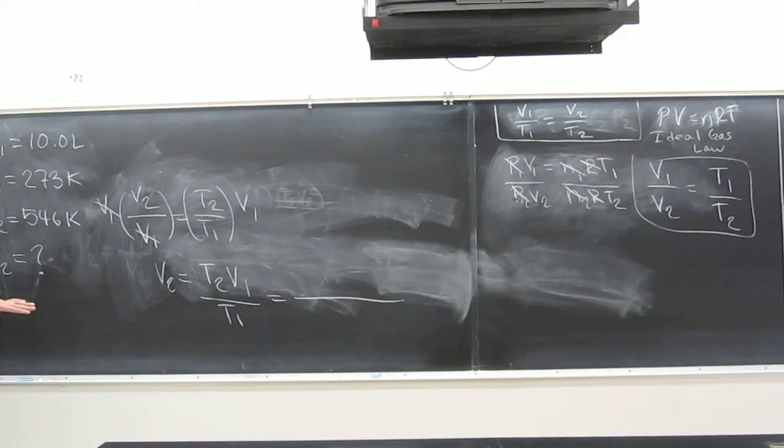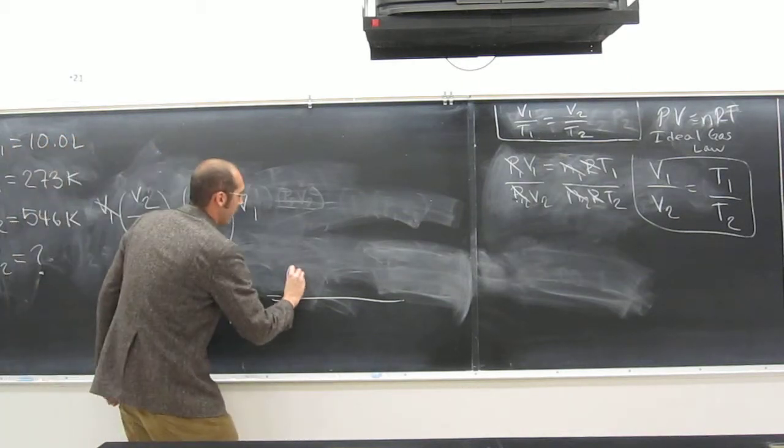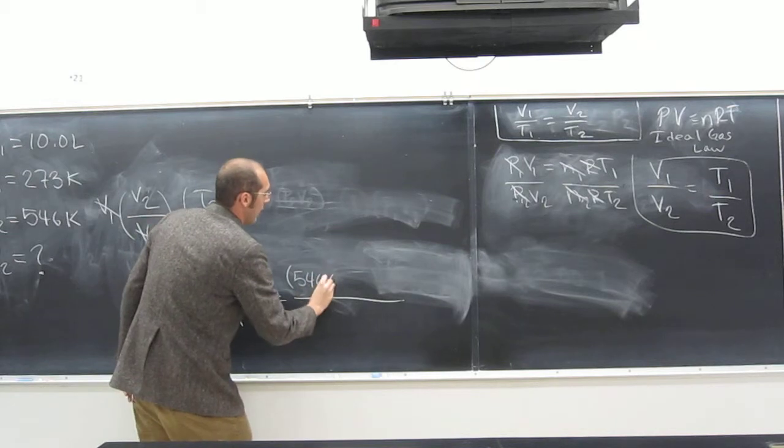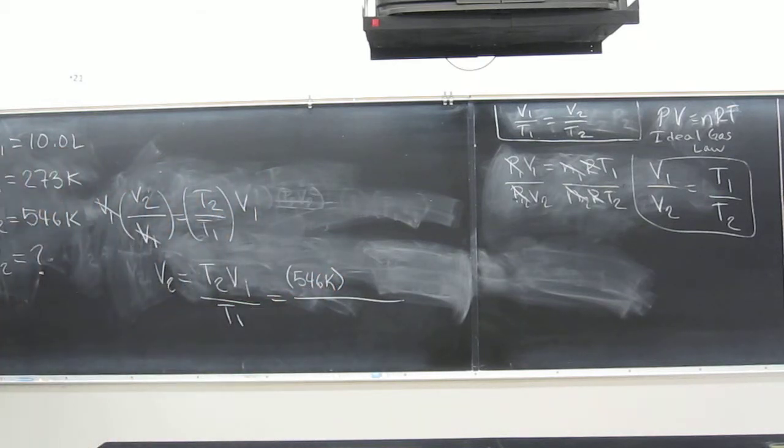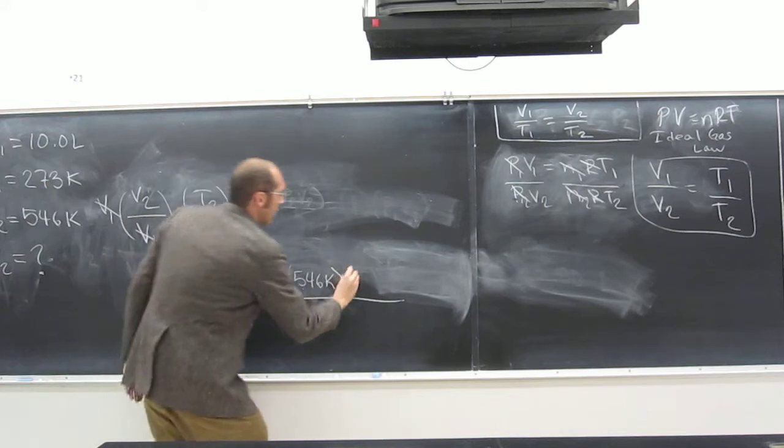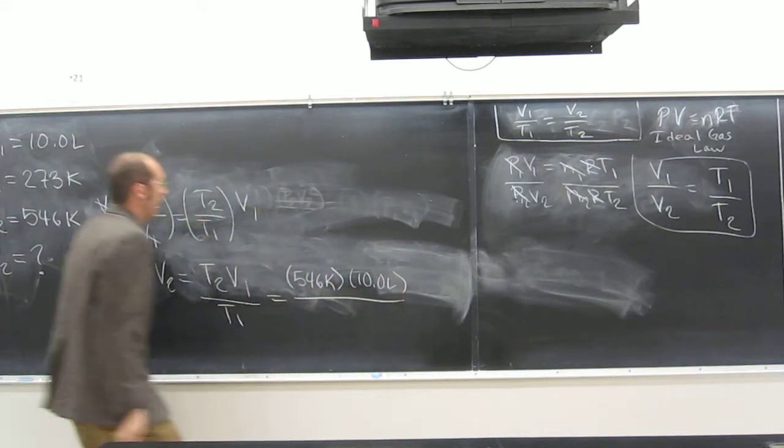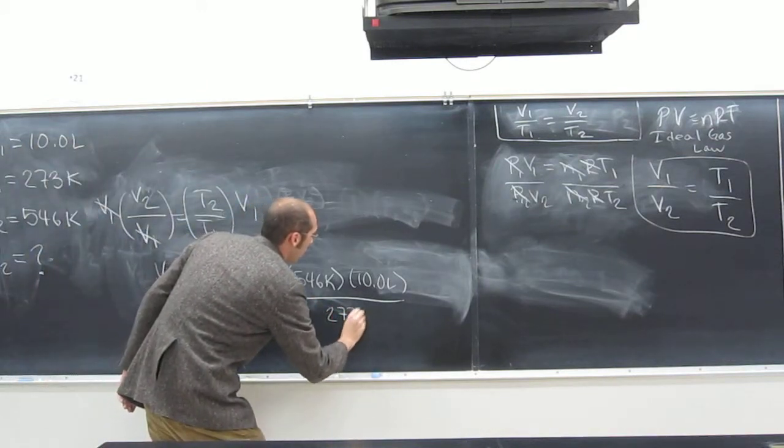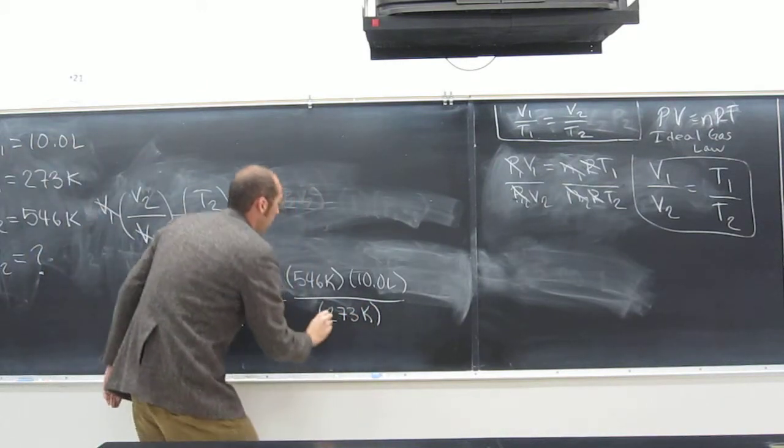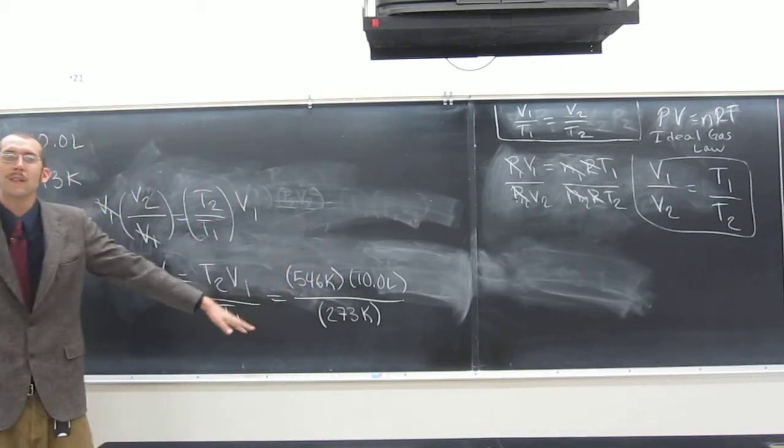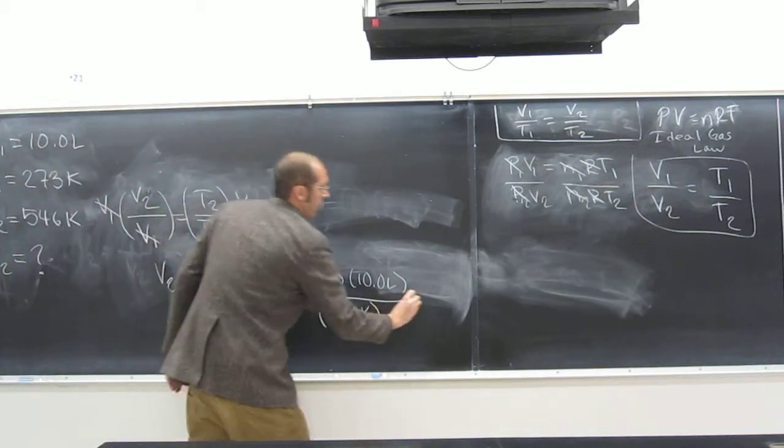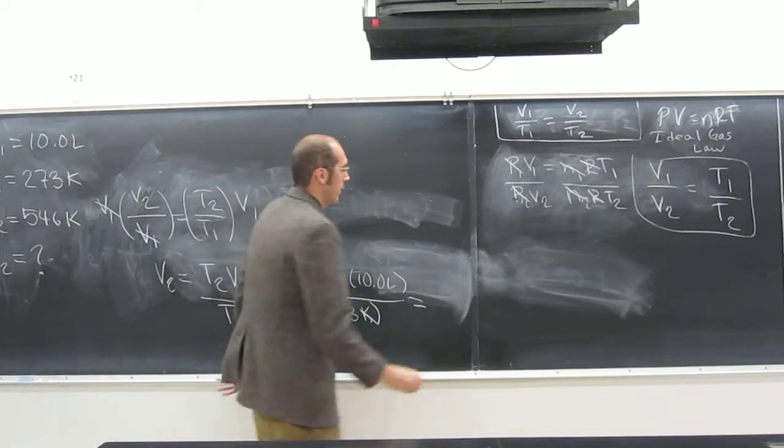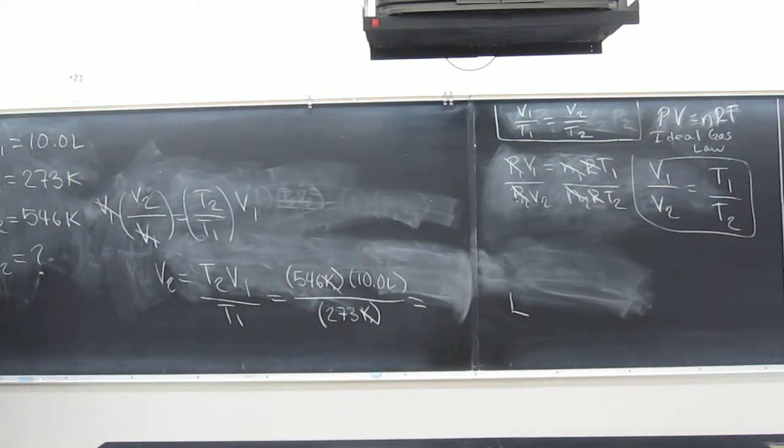So what's our temperature? T2? 546. 546 Kelvin. Remember your units. And V1? 10.0. 10.0 liters. And then T1? 273 Kelvin. So is there units that we can cancel here? Kelvin. What are the units that we get out? Liters. Is that what we're looking for? Yes. Volume is a liter. The volume is good in liters, right? That's what we're looking for.